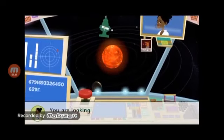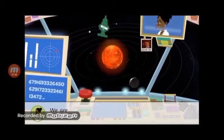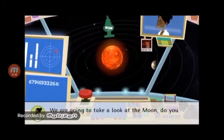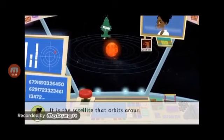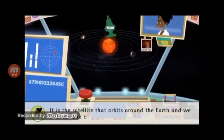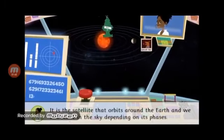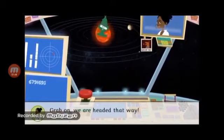You are looking at the solar system. We are going to take a look at the Moon. Do you want to come? It is a satellite that orbits around the Earth and we can see it in the sky depending on its phases. Grab on, we're headed that way.